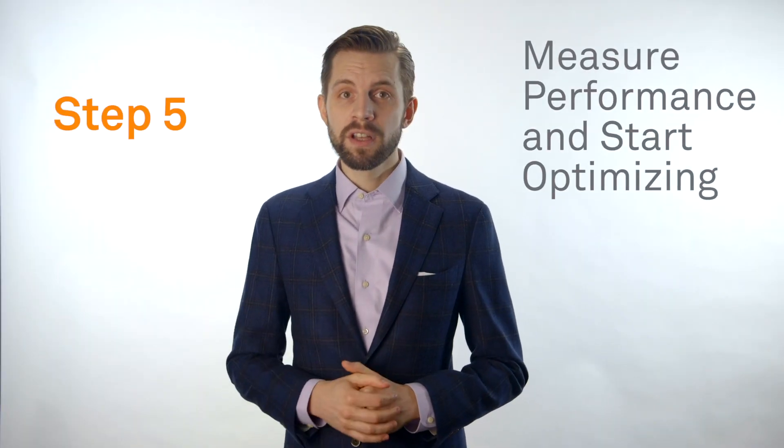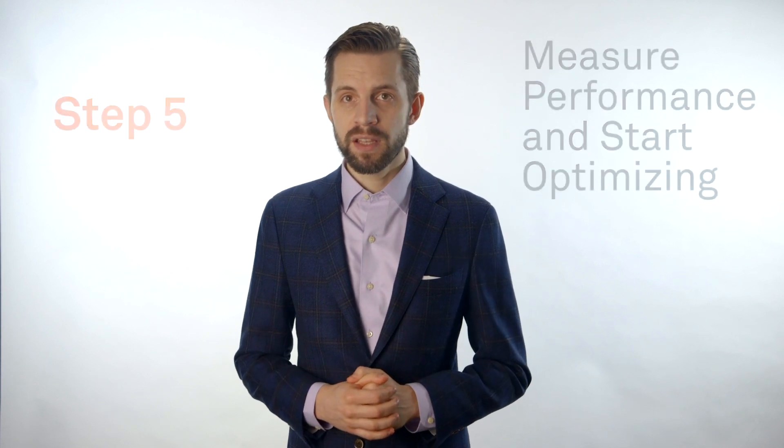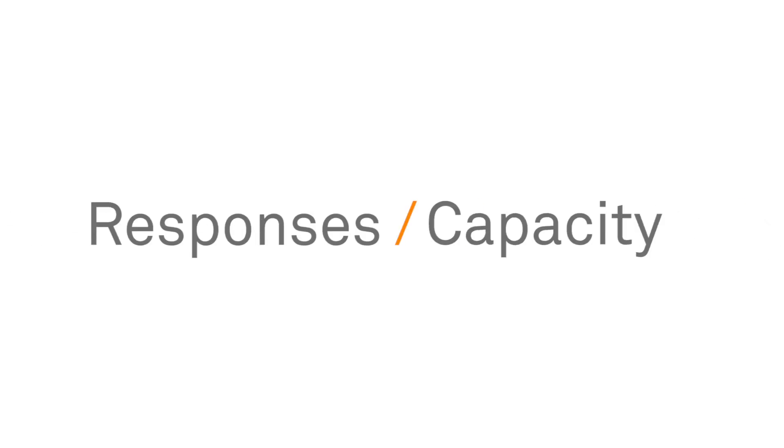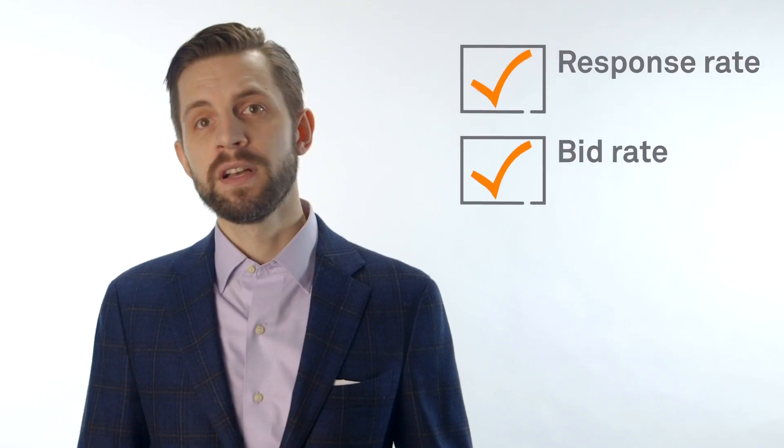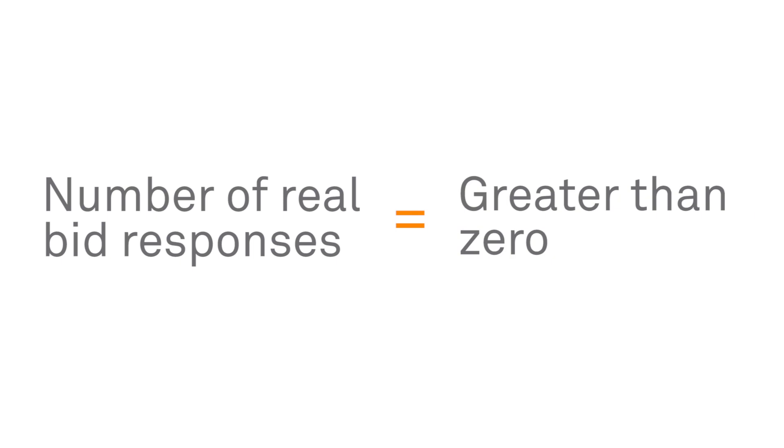And lastly, Step 5: you need to measure performance and optimize. Here are the metrics we suggest you look at. Response rate: how often does your partner respond, including with a zero or no bid? This is measured by responses divided by capacity and helps you understand how to optimize your partner's timeout setting. Try to answer the question: how long do I have to give a partner to get a response 70 or 80% of the time? Bid rate: of the responses, how often is that response a real bid with a value greater than zero? This metric helps you understand how much demand your partner is really bringing to the table.